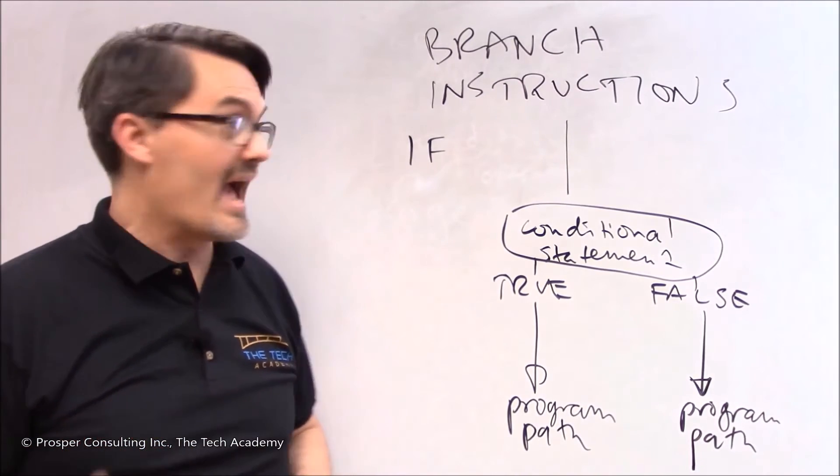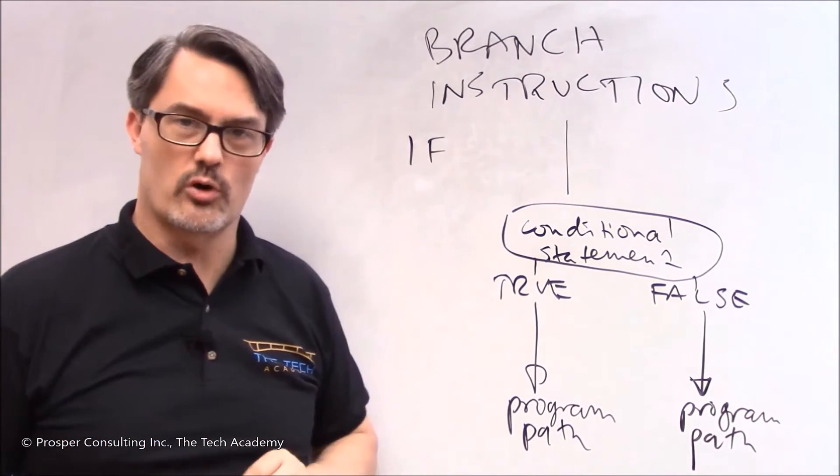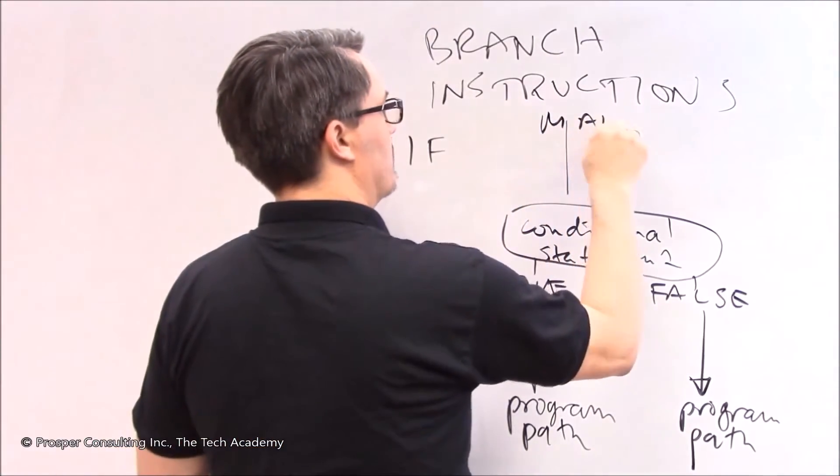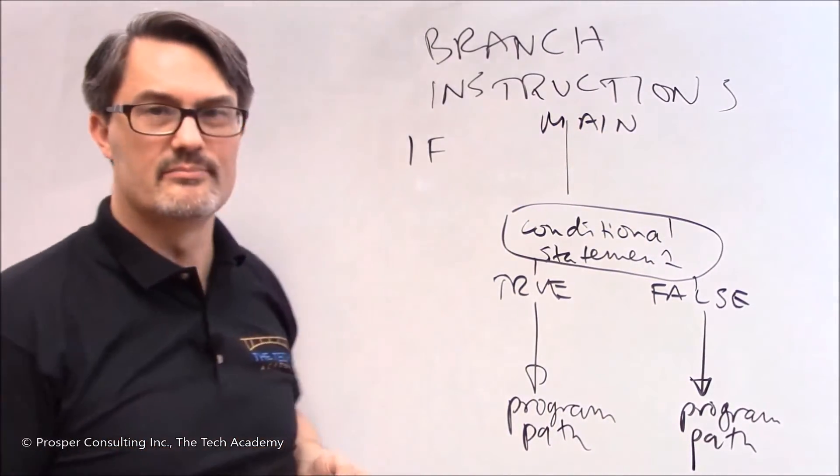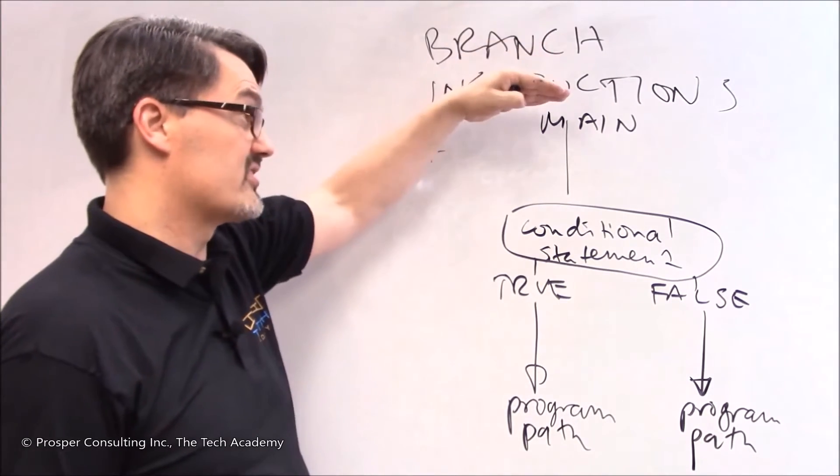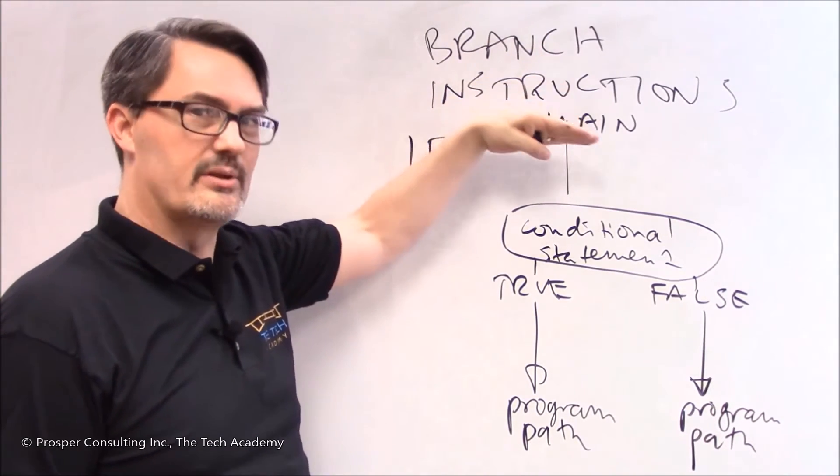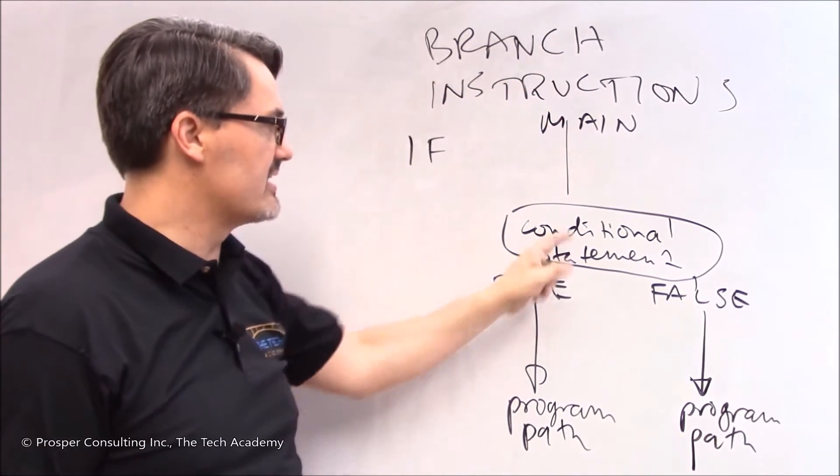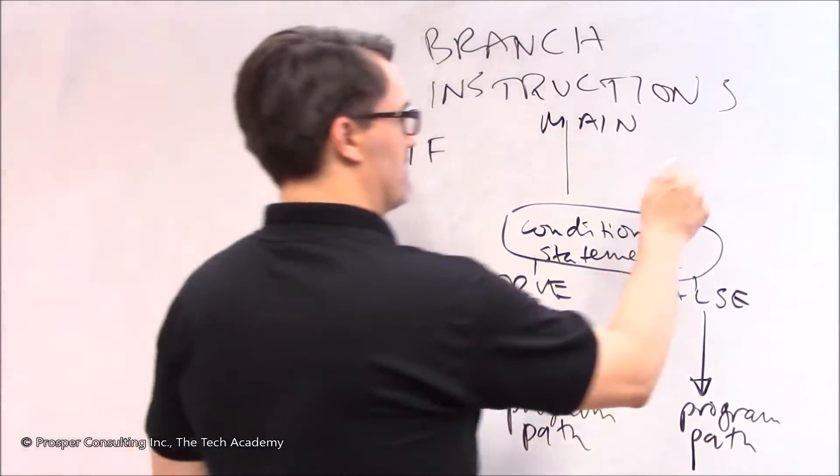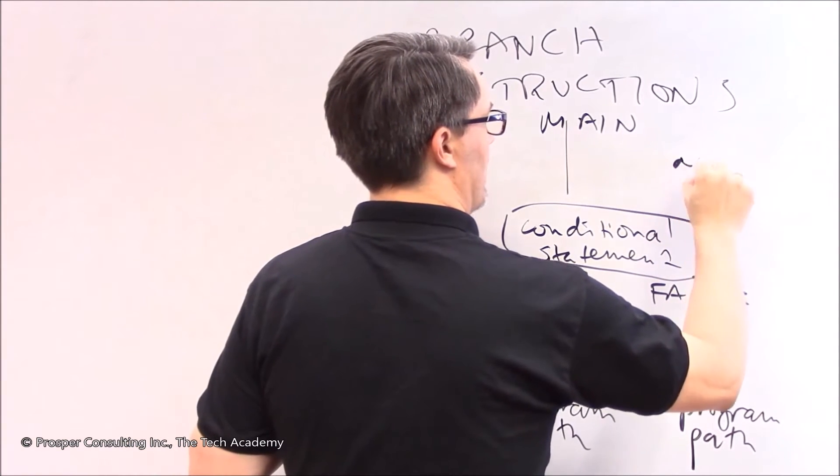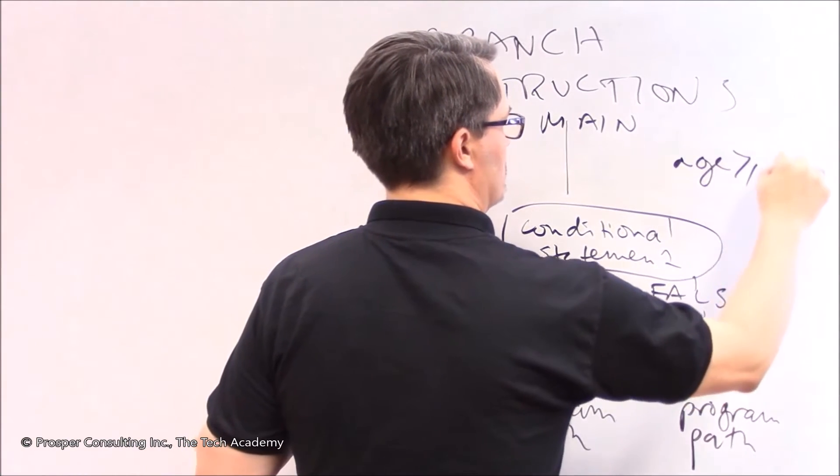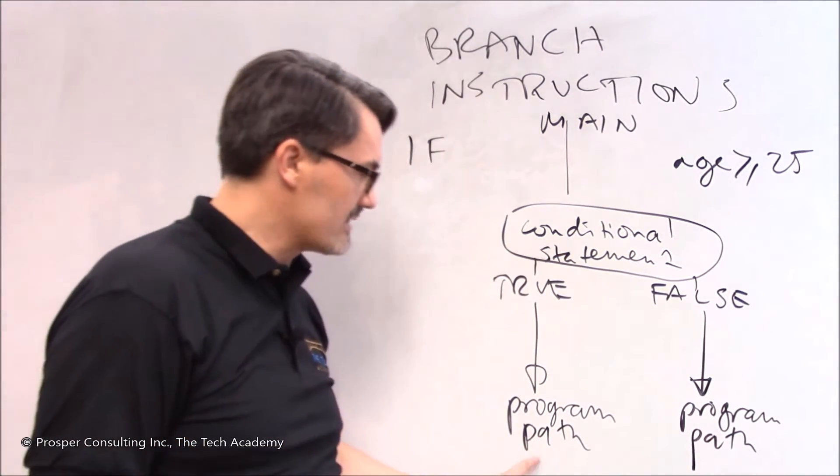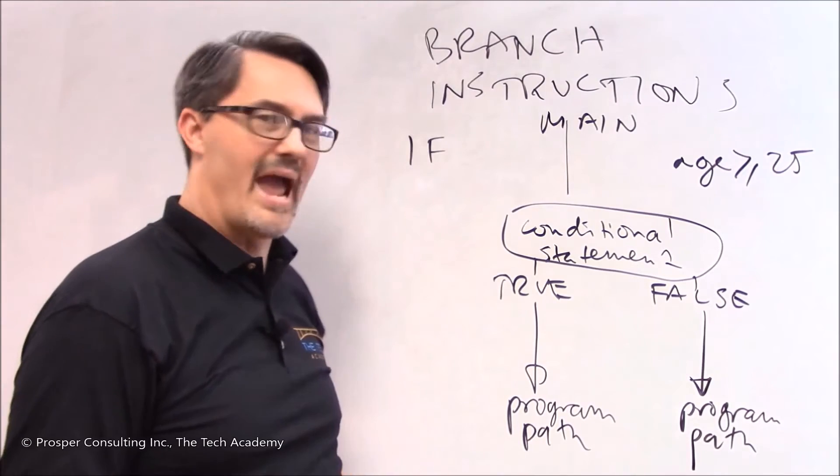Here's a diagram that shows how branch instructions work. The main path of execution for computer program is being executed. All that means is they start at the top and in order they're executing instructions. And when I say they, I mean the computer. The computer is executing the instructions and it hits a conditional statement. It hits something like age greater than or equal to 25.